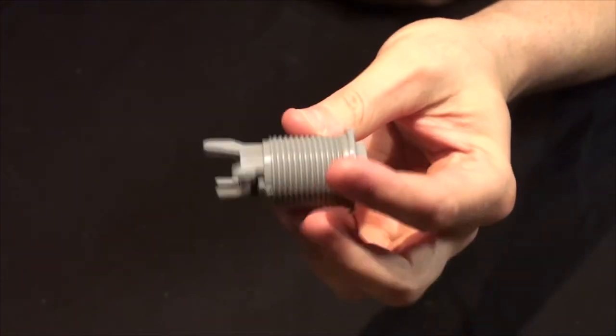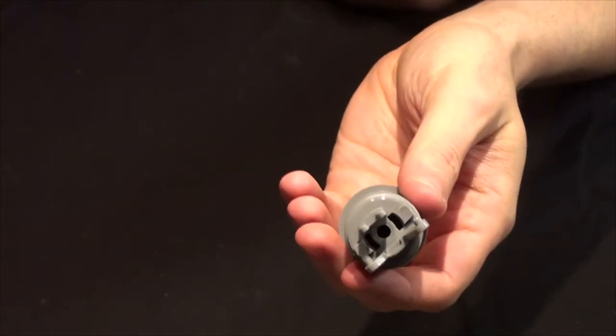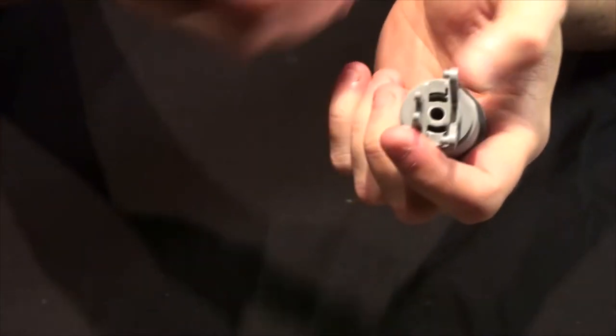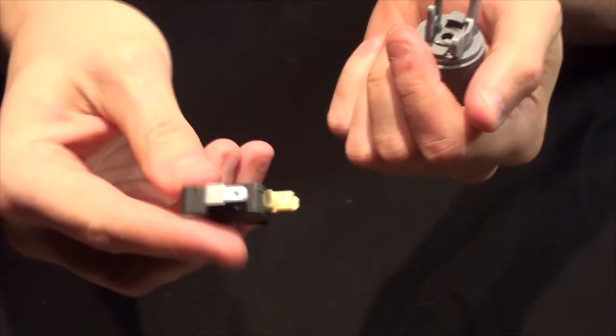Hey, this is just some bonus content on if you have one of these IL Happ style old school buttons, how do I get the cherry switch in or whatever switch you're using? So this is a cherry ZF switch.